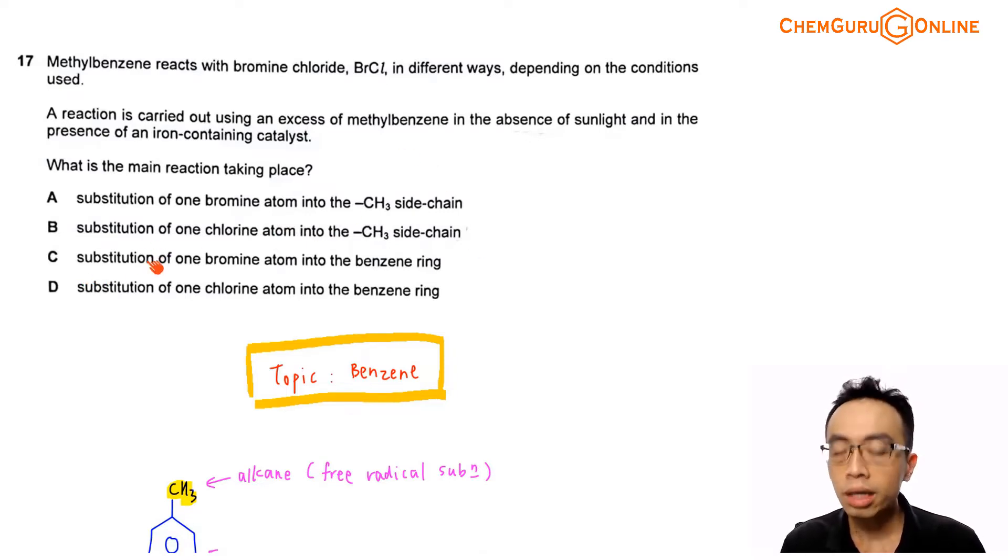Option C, substitution of bromine atom into the benzene ring. Option D, substitution of one chlorine atom into the benzene ring.